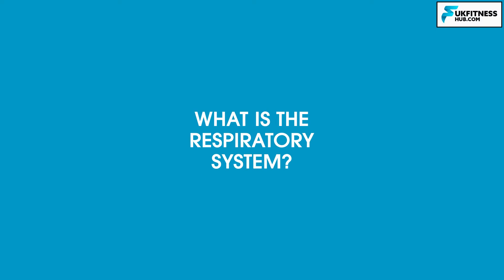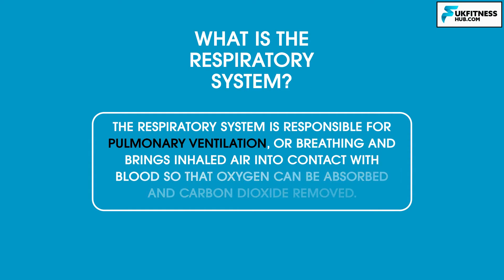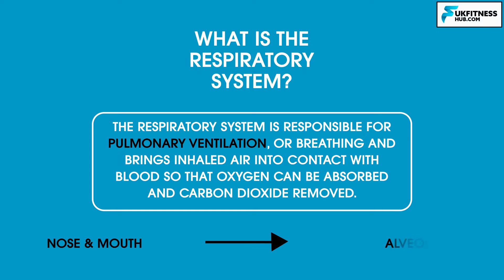So firstly, what is the respiratory system? The respiratory system is responsible for pulmonary ventilation, or breathing, and brings inhaled air into contact with blood so that oxygen can be absorbed and carbon dioxide removed. It consists of structures from the nose and mouth all the way down to the alveoli, which are tiny structures in the lungs where gases are exchanged.